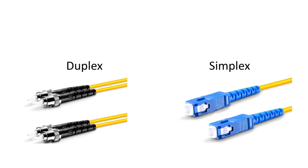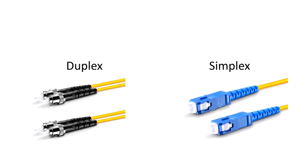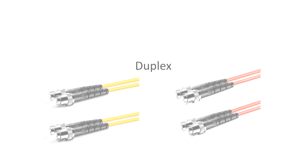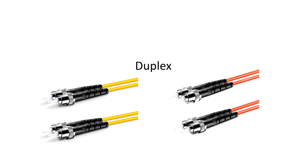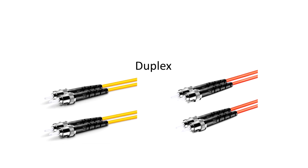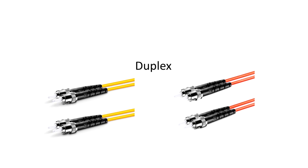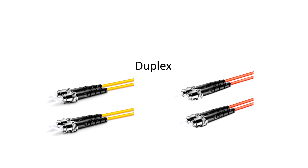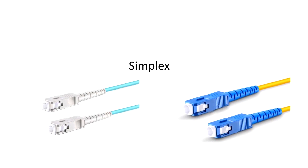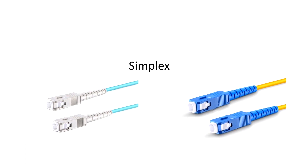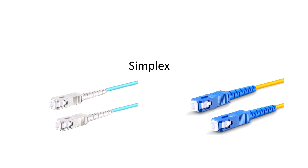Single mode and multi-mode cables are available in both duplex and simplex options. Duplex fiber optic cables consist of two fibers, usually in a side-by-side style. They are used in applications that require simultaneous bi-directional data transfer, such as fiber switches, servers, and modems. Simplex fiber optic cables consist of a single fiber and are used in applications that require one-way data transfer.